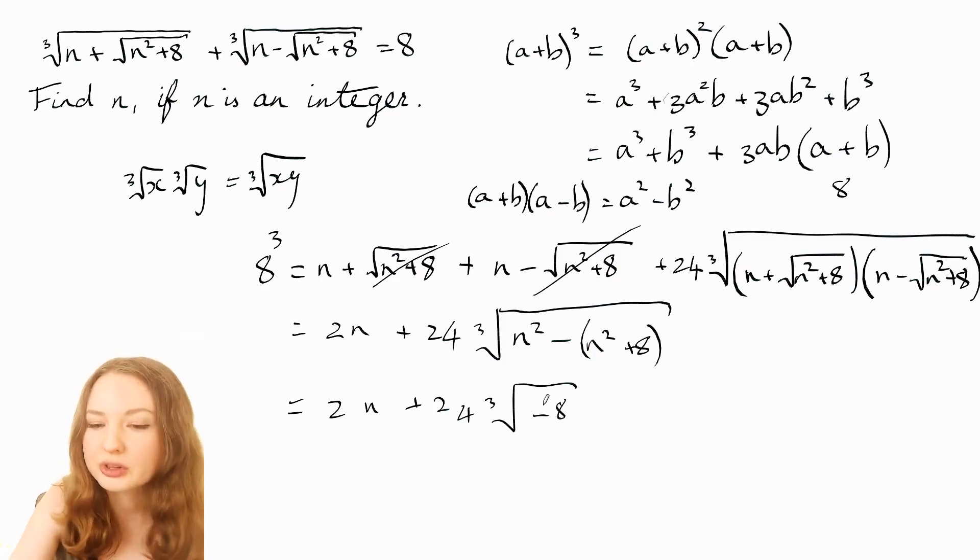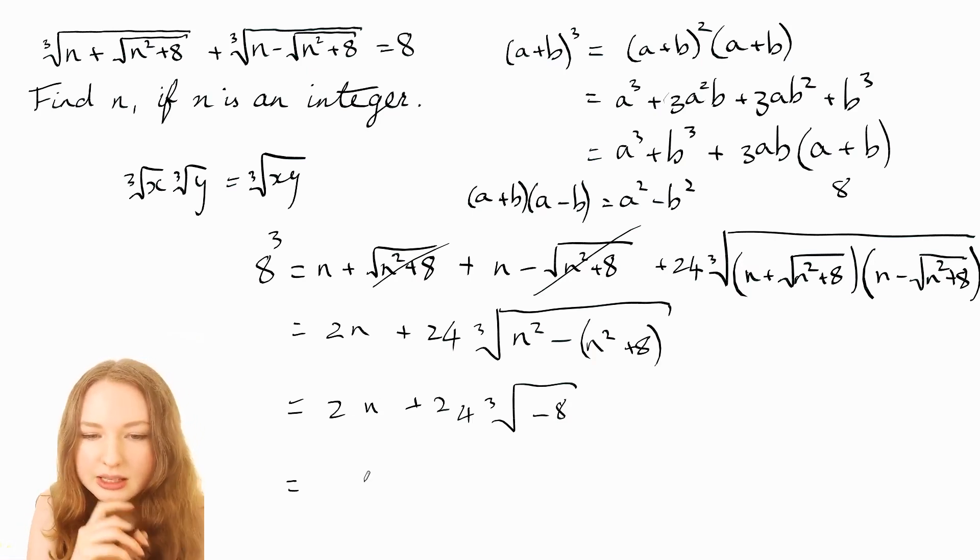Now cube root of 8 is 2 so that's going to be -2 and let's divide both sides by 2 as well because you've got a factor of 2 in everything. Now on the left hand side,